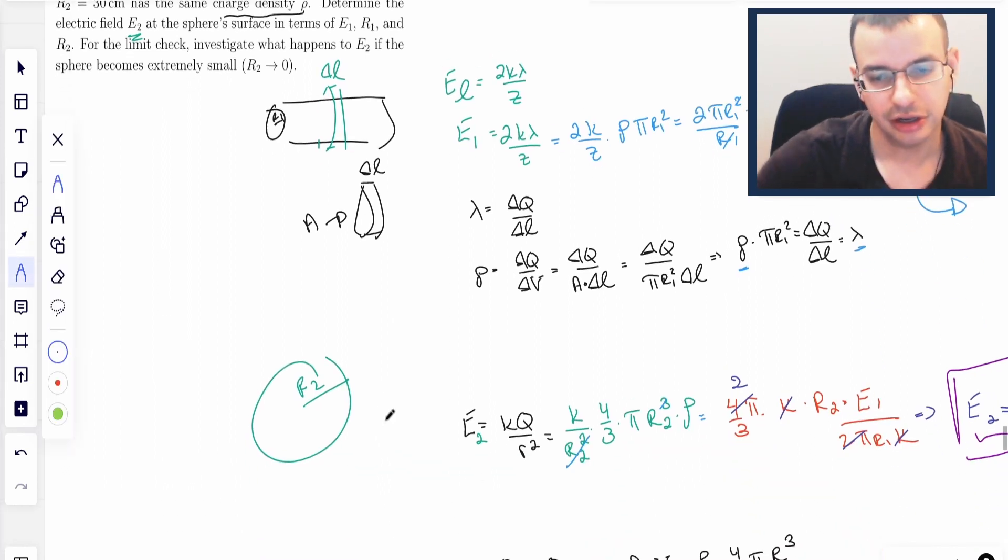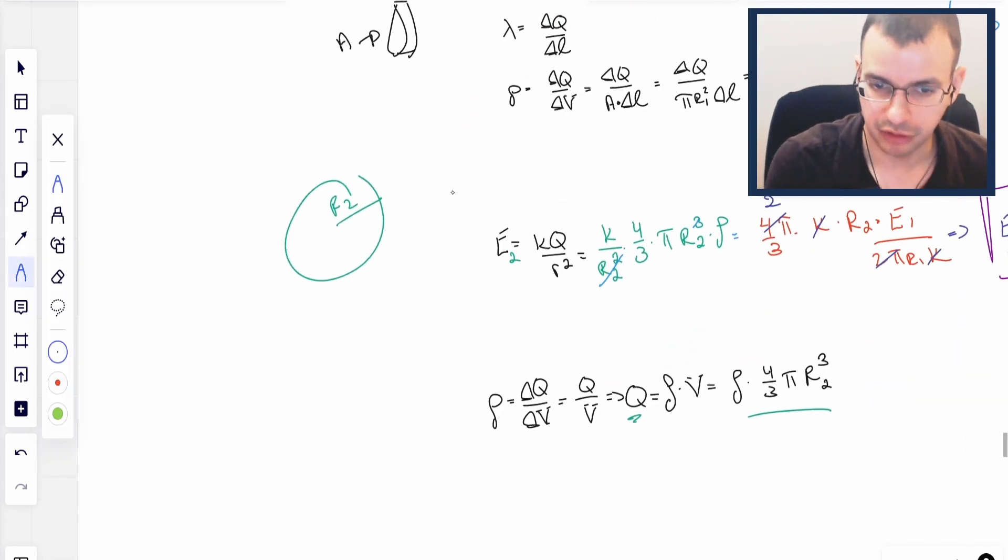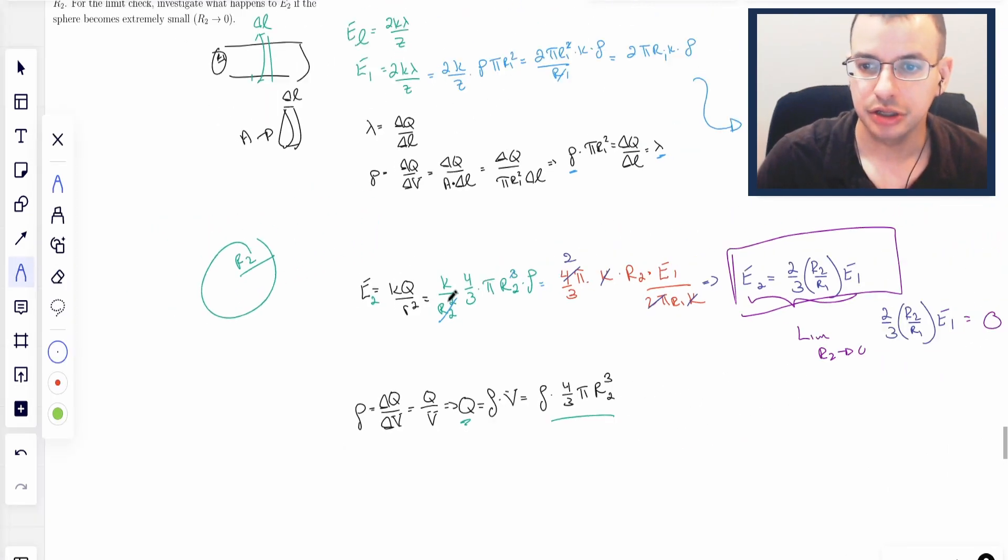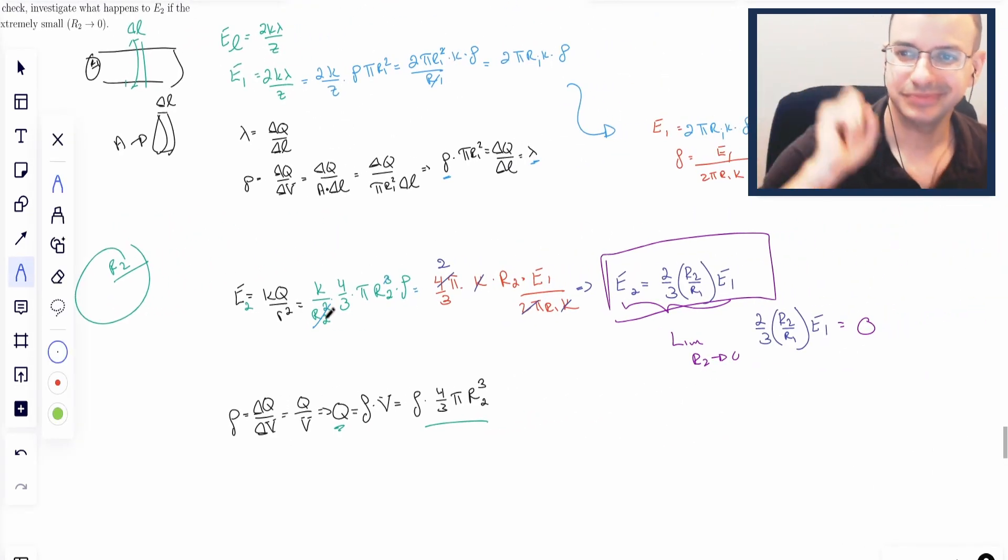Then I looked at the sphere. We were told that they had the same volumetric charge density. So I wrote charge in terms of our volumetric charge density. Plugged things in, did some more math, rearranged things, and we got an answer. Hope that helped. See you next time.